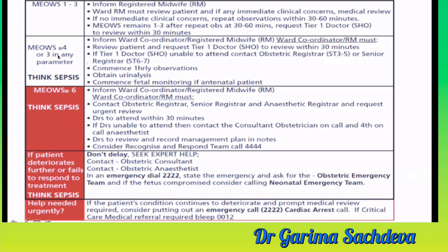If the score is 3 or more in any parameter, consider sepsis. The ward registered midwife or coordinator should be informed and immediately review the patient. If the score is 4 or more, immediately inform the Tier 1 doctor or SHO to review within 30 minutes. If Tier 1 is unable to attend, an obstetric registrar ST3 to ST5 or senior registrar ST6 to ST7 should review. A urine analysis should be done and fetal monitoring commenced if antenatal.